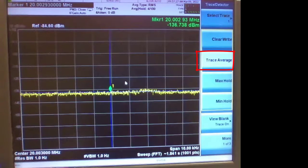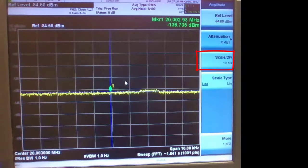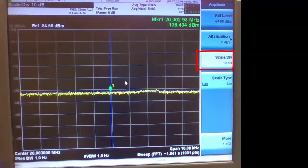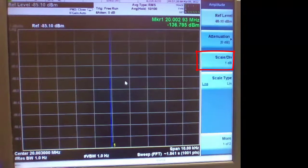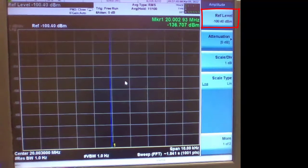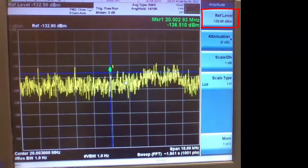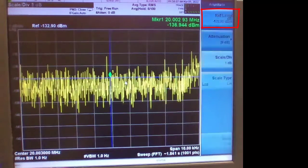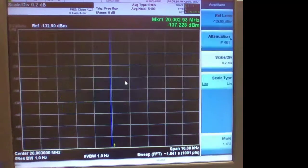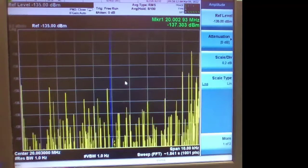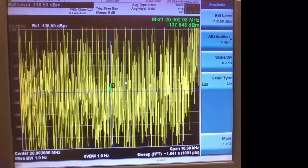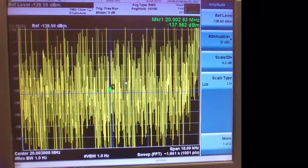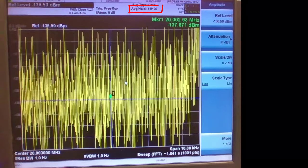While we're at it I'm going to make some changes. Go into the amplitude section. I'm going to change scales per division. I will change it all the way down to one dB and I need to adjust reference level to get it back into view. I reduce it further to 0.2 decibels per division and you can see it almost fills the whole screen. Let's just wait. Now it's at 11 averages so far and counting.